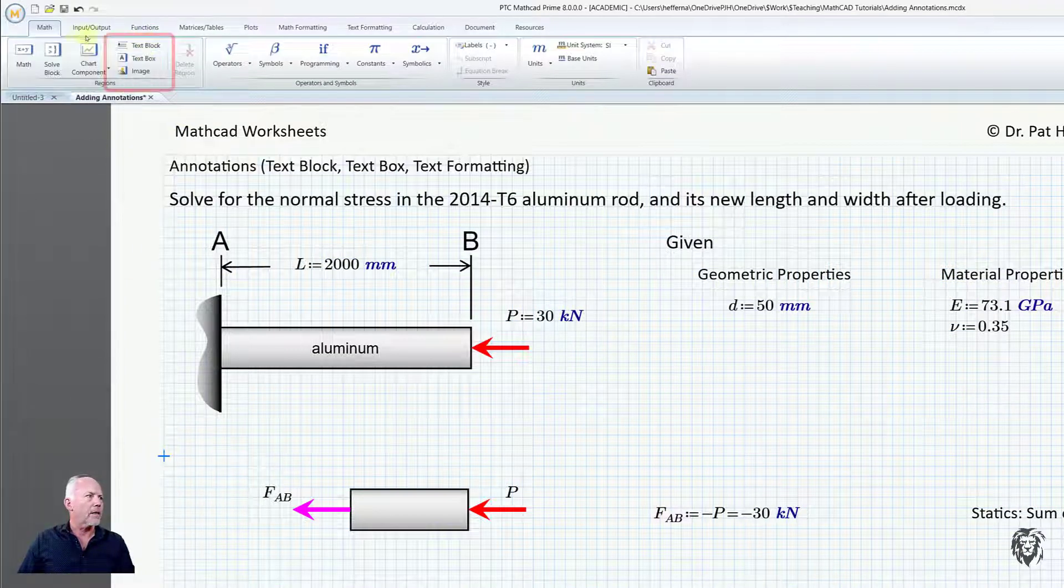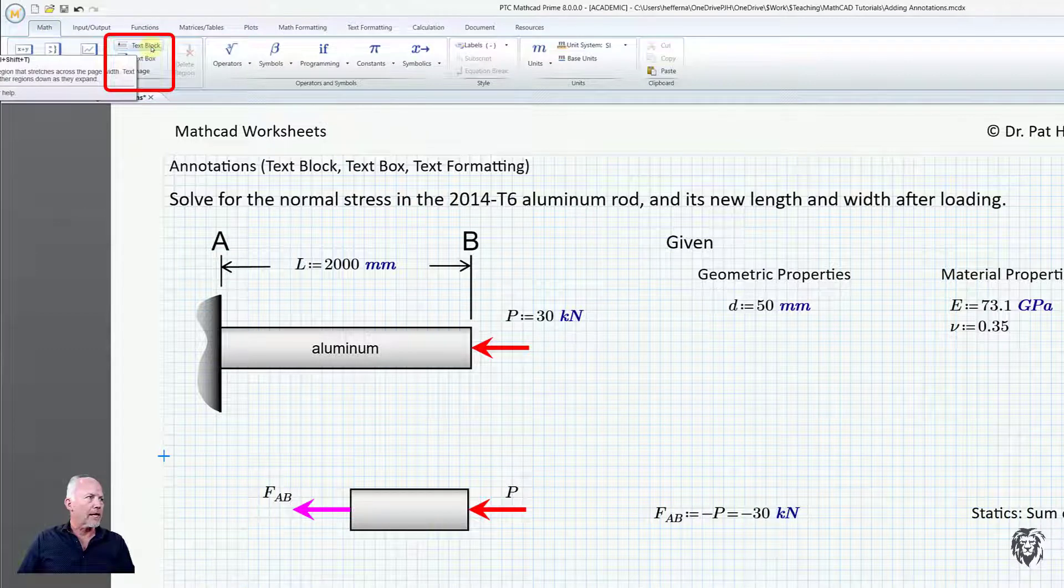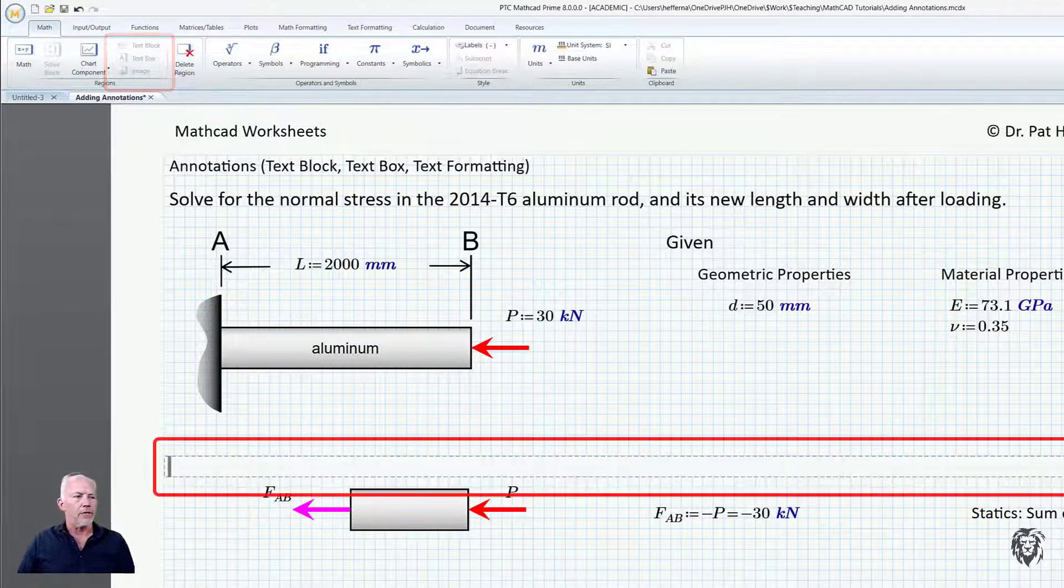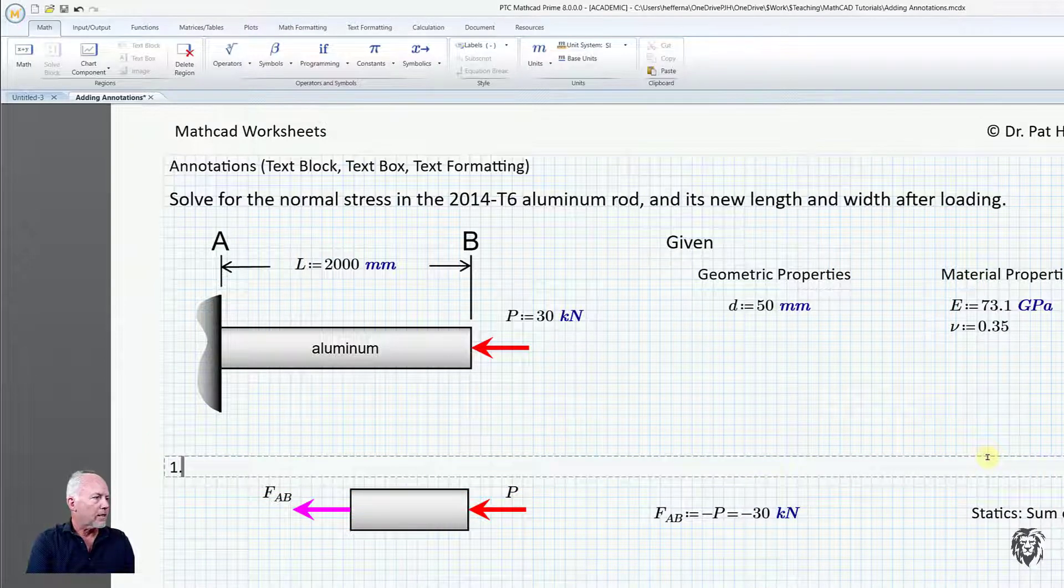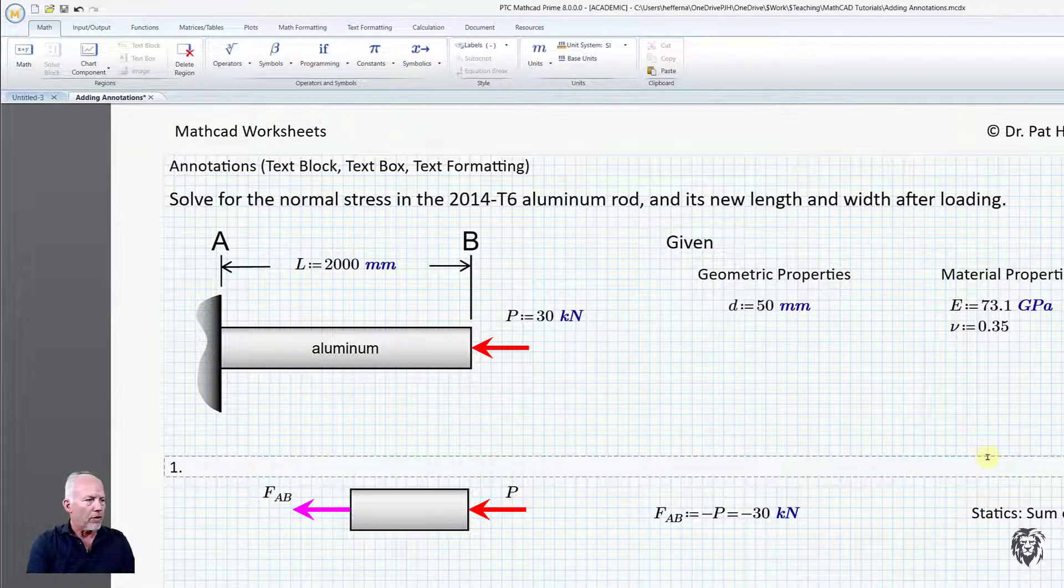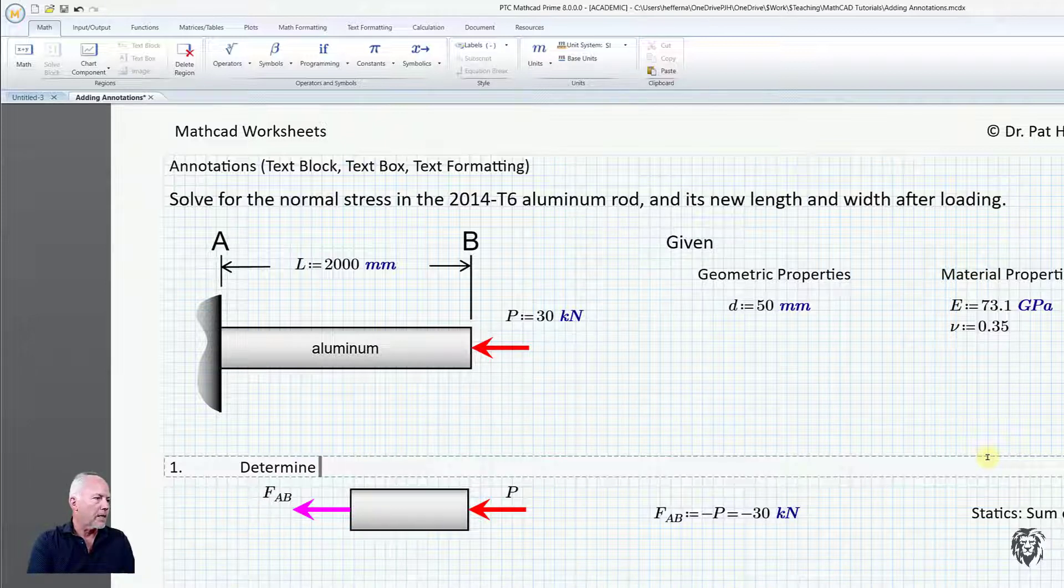And I go up here I'm in the math tab and I go to text block and you see it gives me a block and it goes straight across the full width and so I can type in here and tab over and say what am I going to do? I'm going to determine the internal force between A and B.